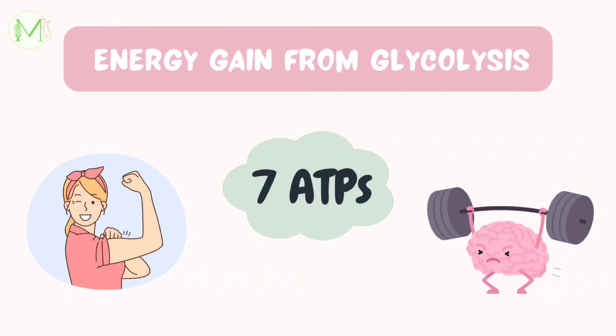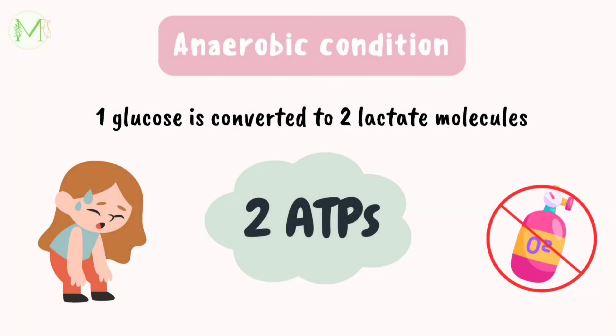We can discuss this under two possible conditions: anaerobic and aerobic conditions. Under anaerobic conditions, where oxygen is not present, one molecule of glucose gets converted into two molecules of lactate and we get two ATP molecules as a result.